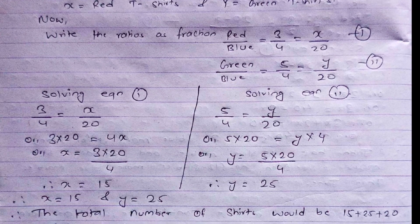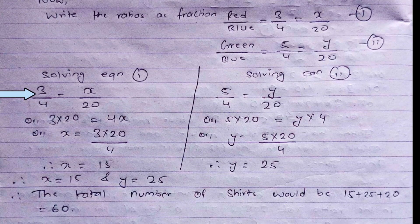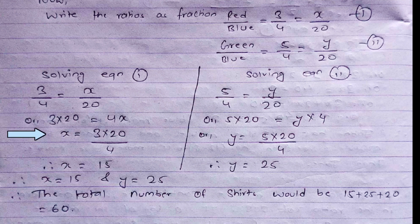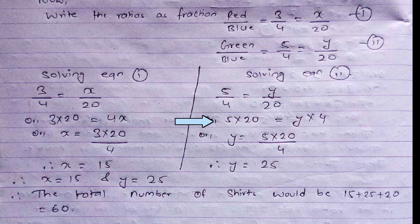Solving equation 1: cross multiplying gives 3 times 20 equals 4x, so x equals 60 divided by 4, which equals 15 red t-shirts. Solving equation 2: 5 times 20 equals 4y, so y equals 100 divided by 4, which equals 25 green t-shirts. The total number of t-shirts is 15 plus 20 plus 25, which equals 60 t-shirts altogether.